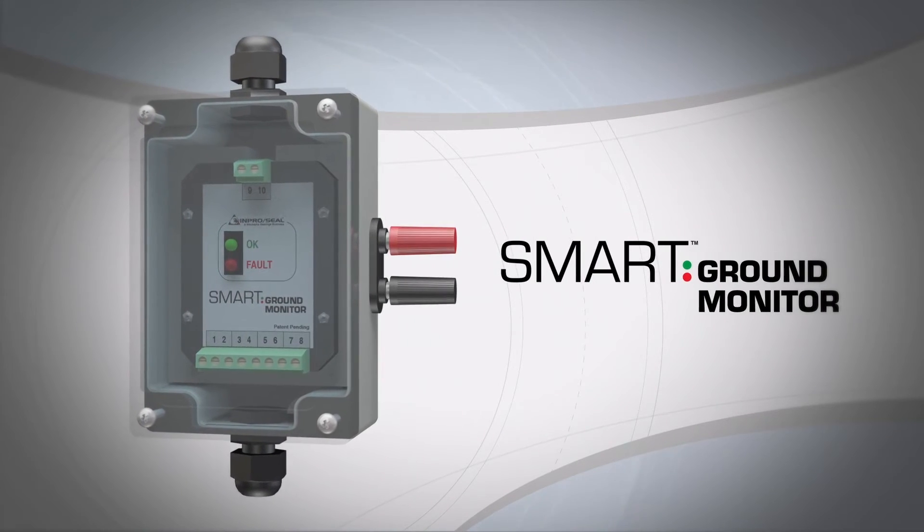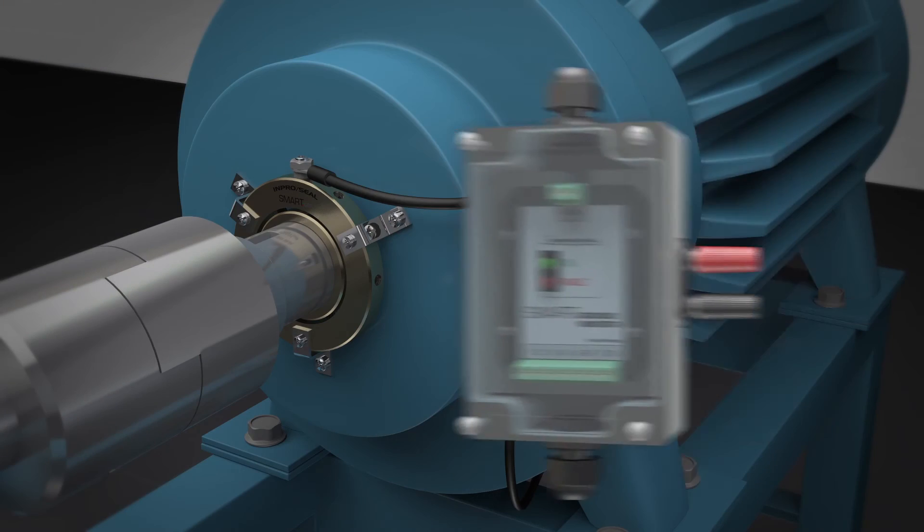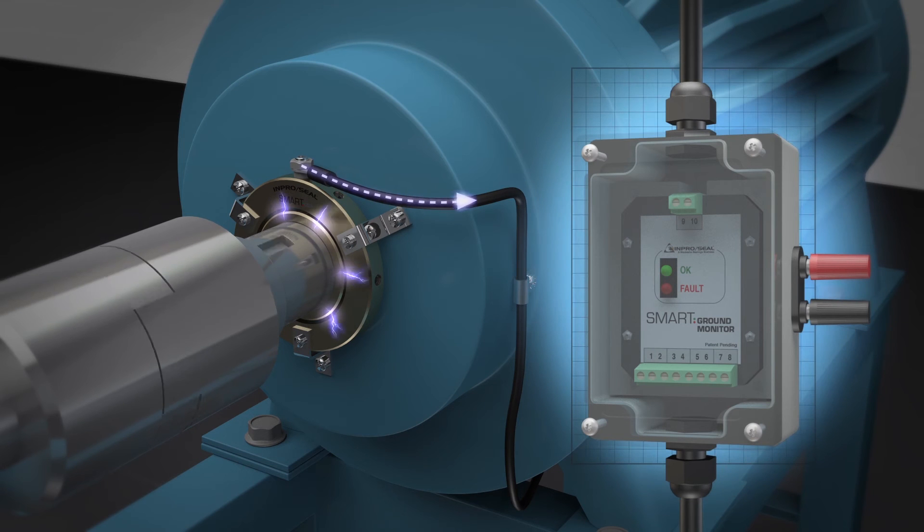the Smart Ground Monitor works with the Smart CDR or Smart MGS to provide instant feedback on shaft grounding performance. A simple interface alerts users in real time of interrupted contact between conductive filaments and the shaft, providing the opportunity to return shaft grounding to peak performance before bearing damage occurs.